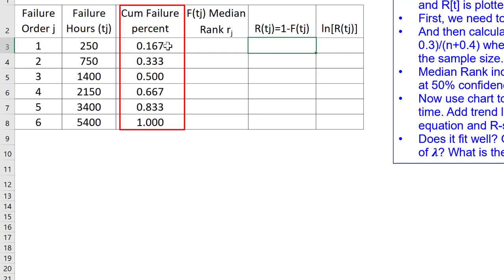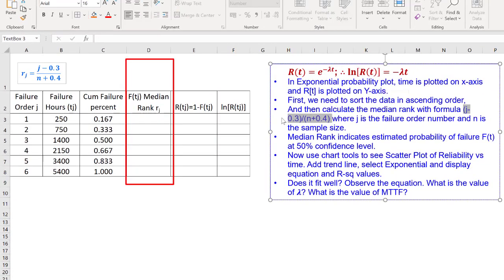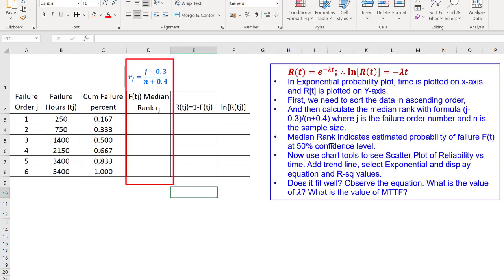But is this correct? If we consider this as correct, by 5400 hours, all the components will fail. And below 250 hours, 16.7% will fail. Statisticians have recommended a correction or modification in this number. And that is called median rank. And that median rank can be calculated by this formula, J minus 0.3 upon N plus 0.4. That formula is written over here. And we will use this formula to calculate the median rank. What is median rank?